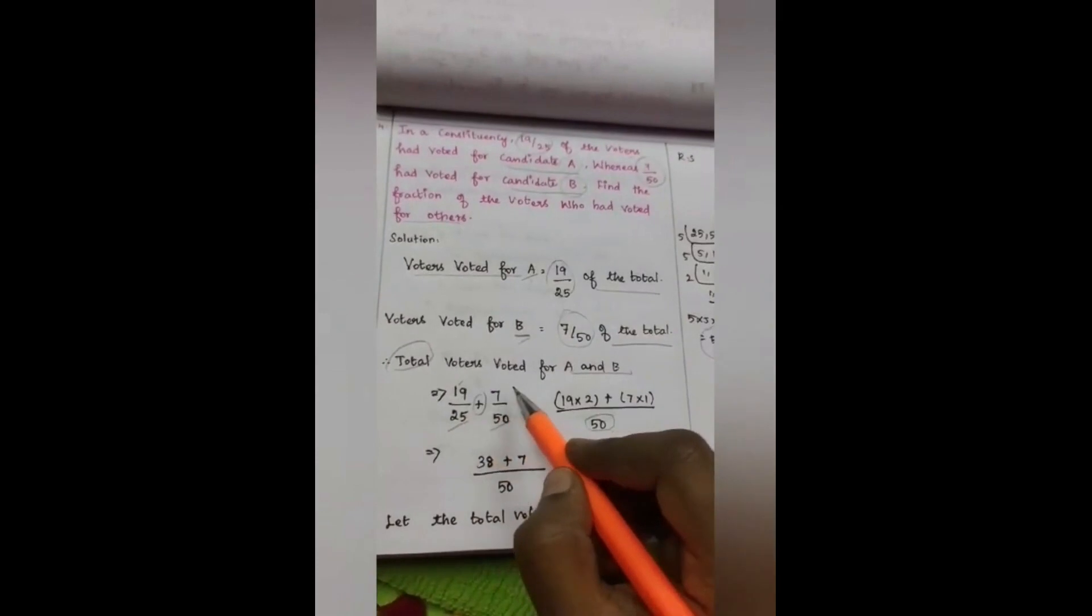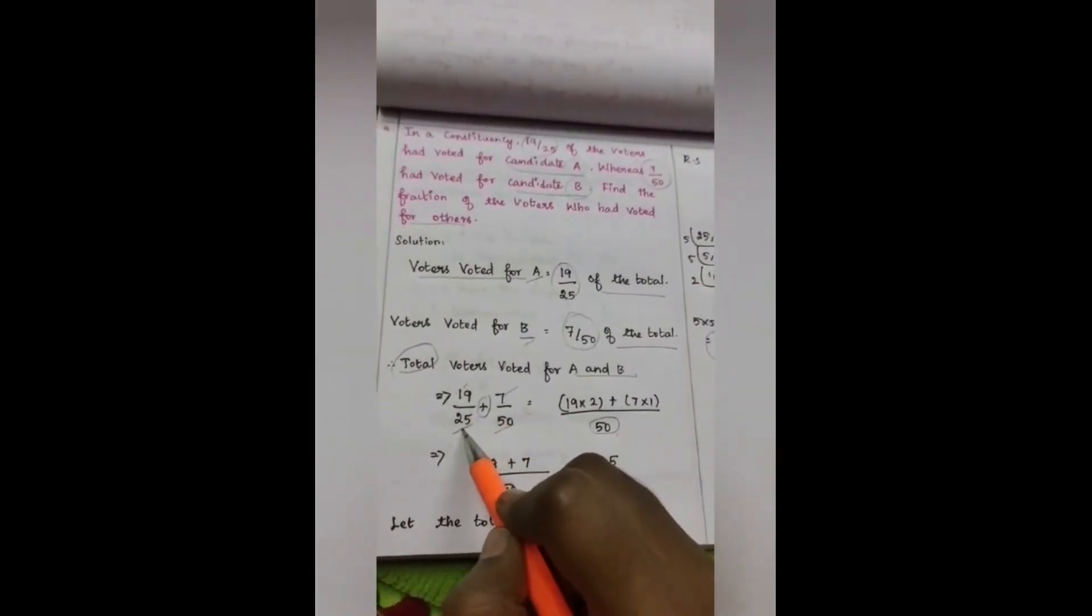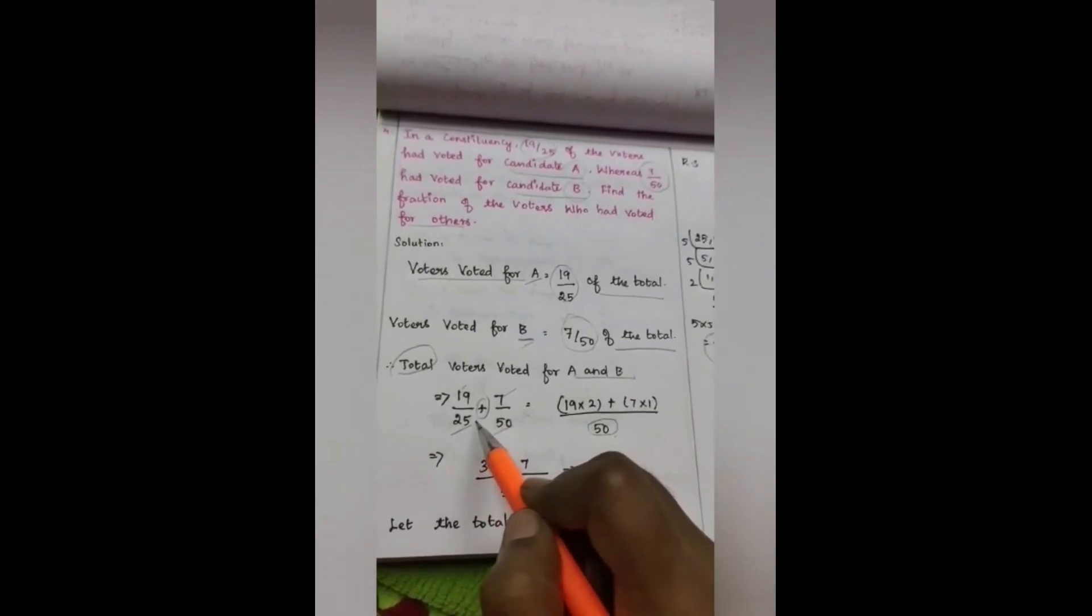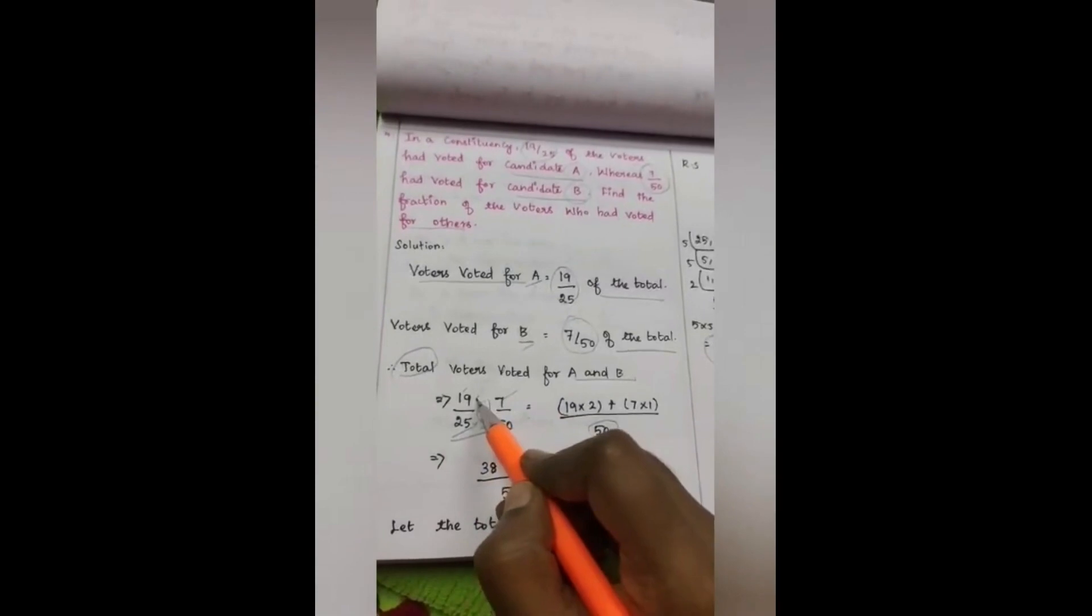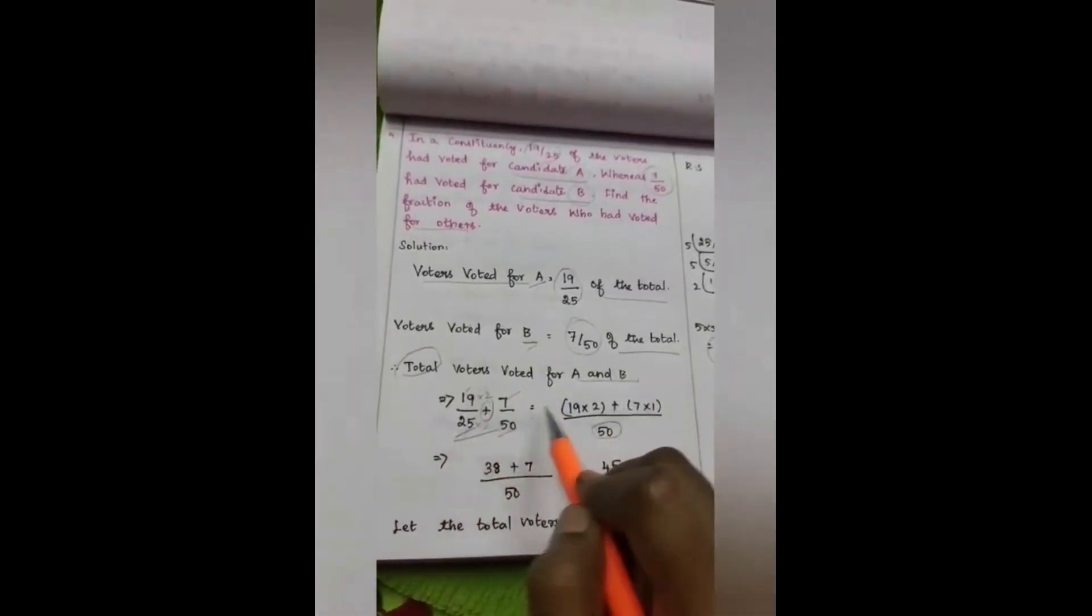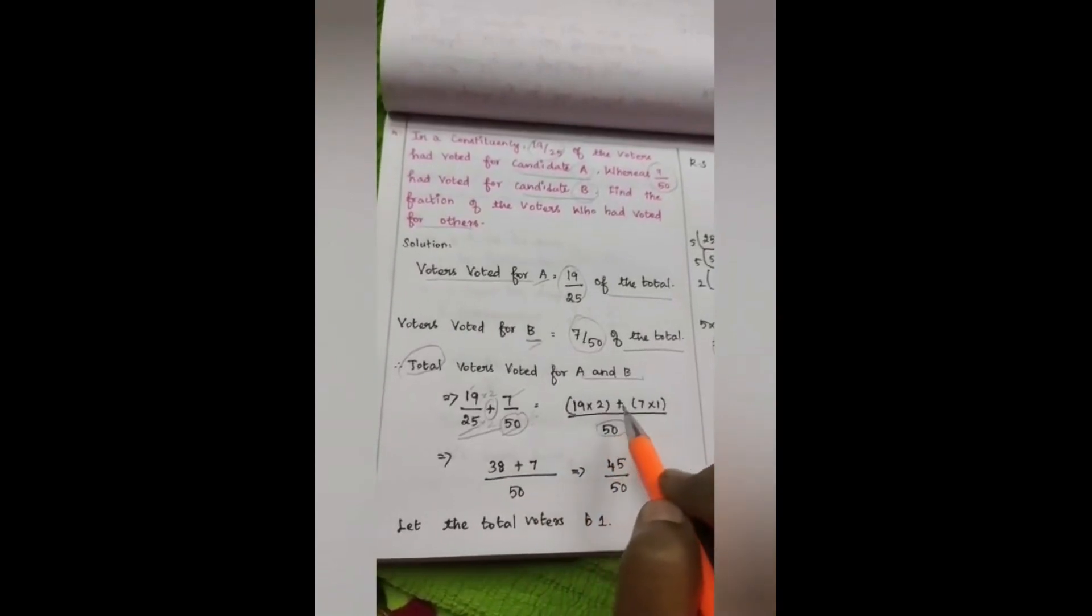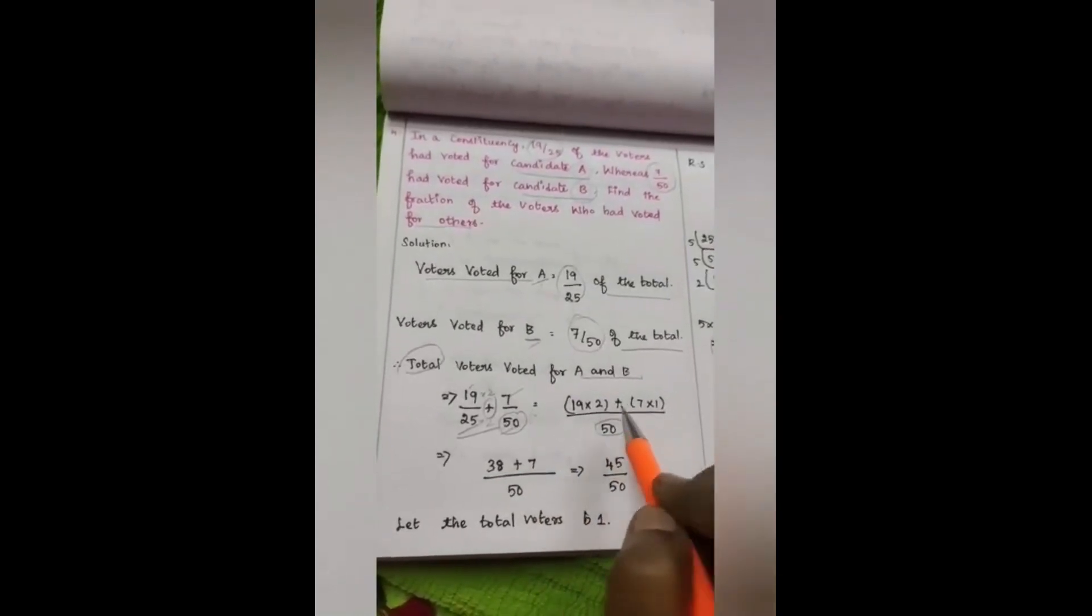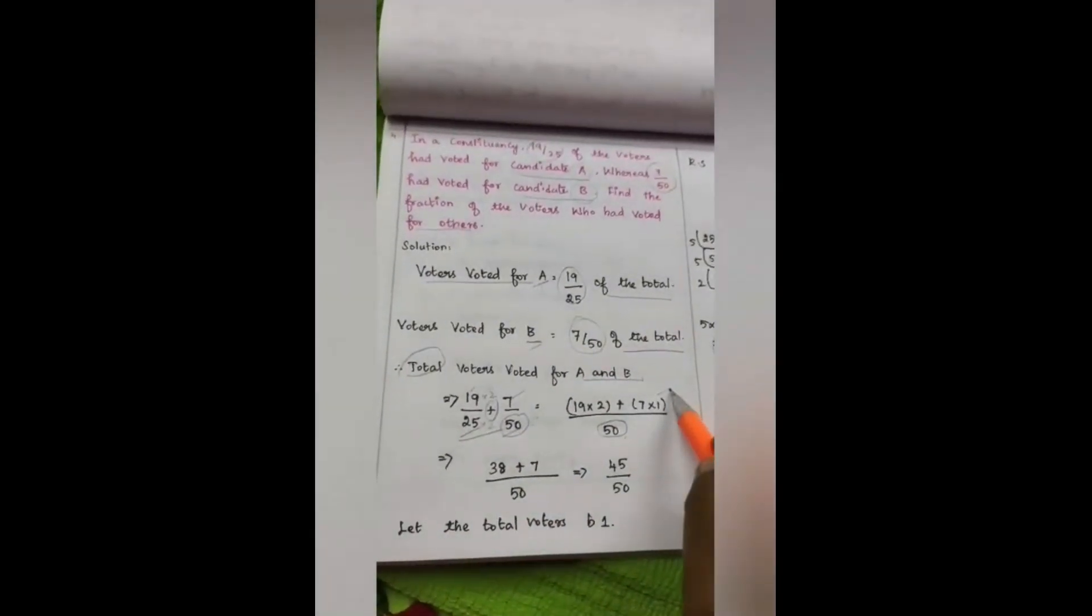Therefore, I'm converting our denominator part into 50. See, this is our first fraction part, 19. This is our second fraction part. See, here we have denominator as 25. 25 into 2 becomes 50. So I'm going to multiply that numerator also with 2. 19 into 2, plus...